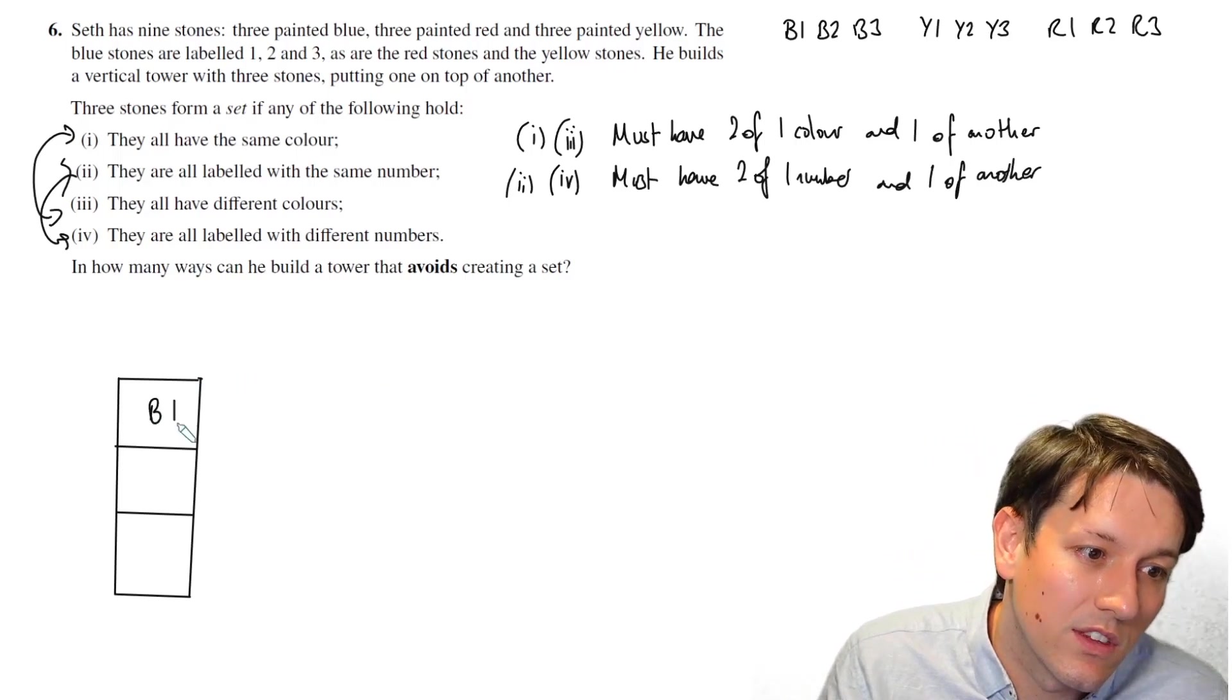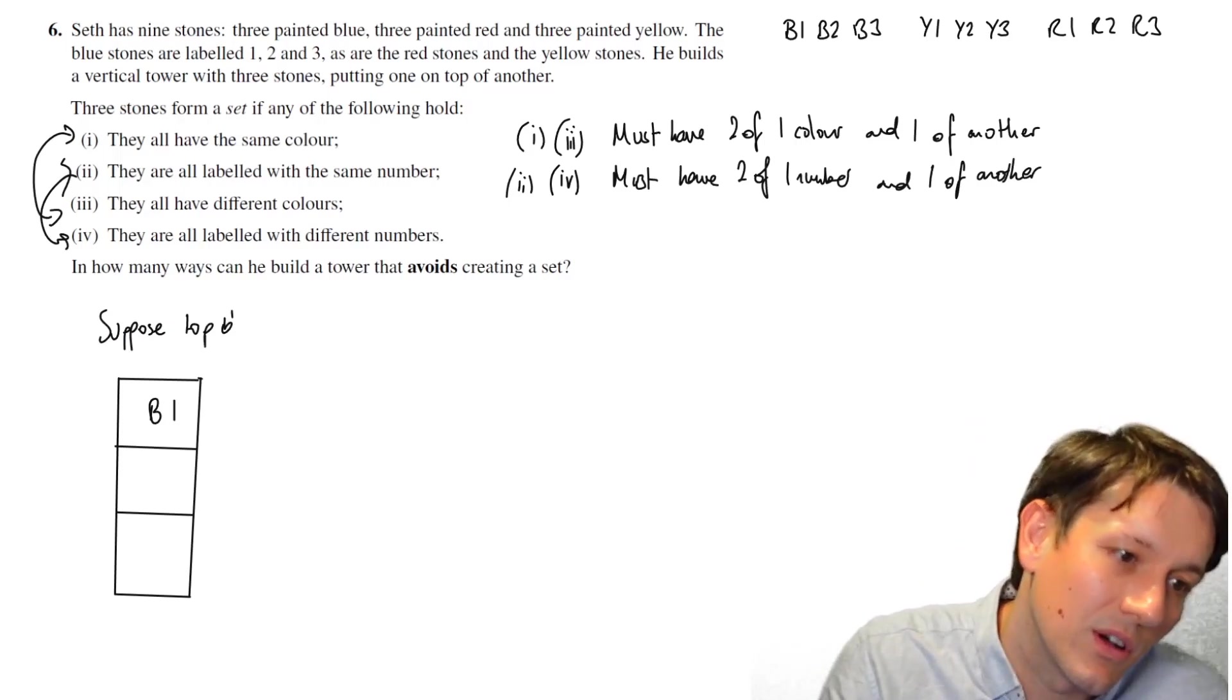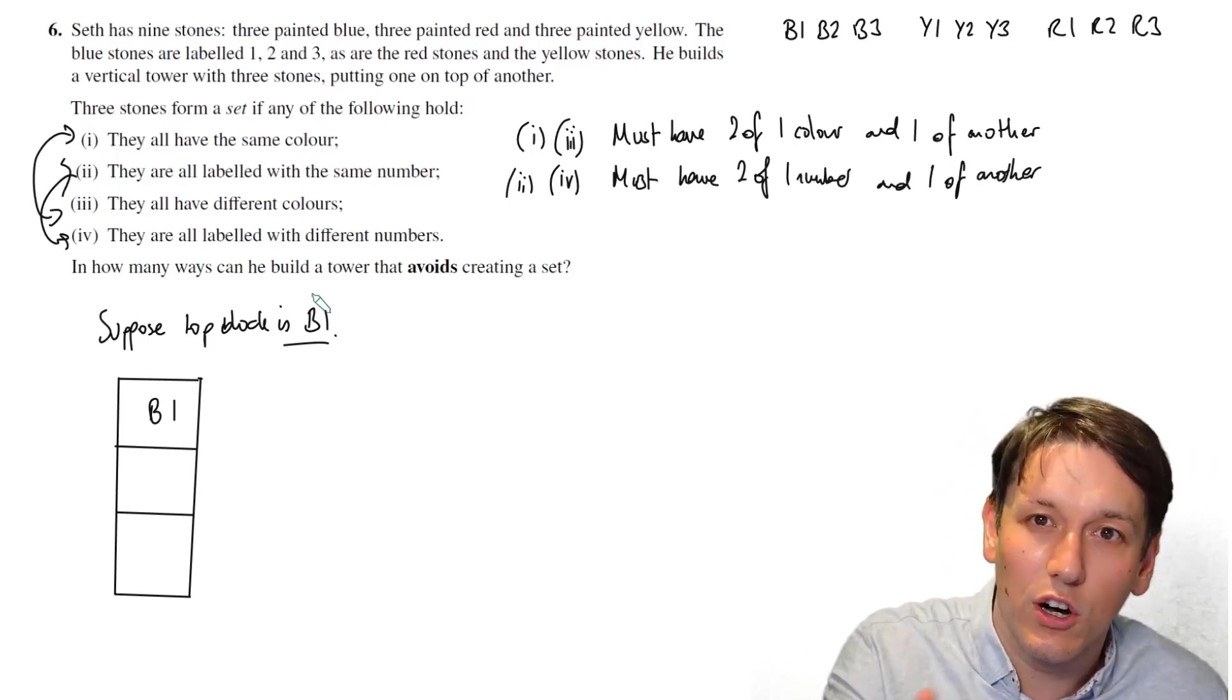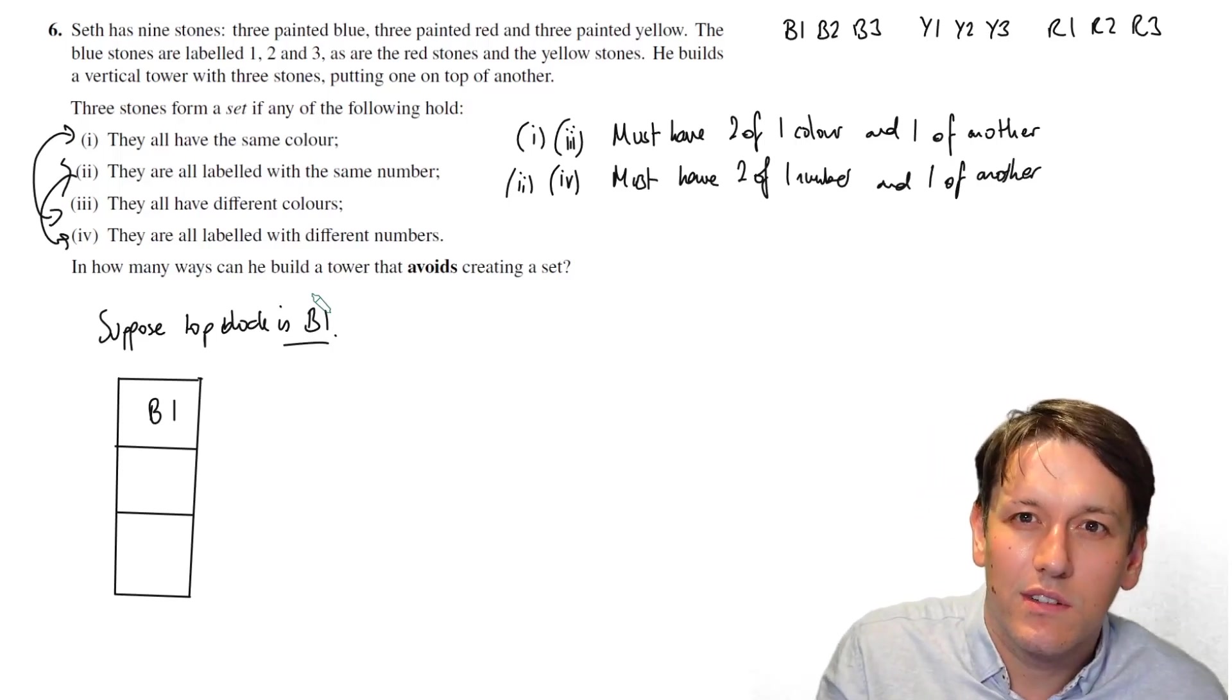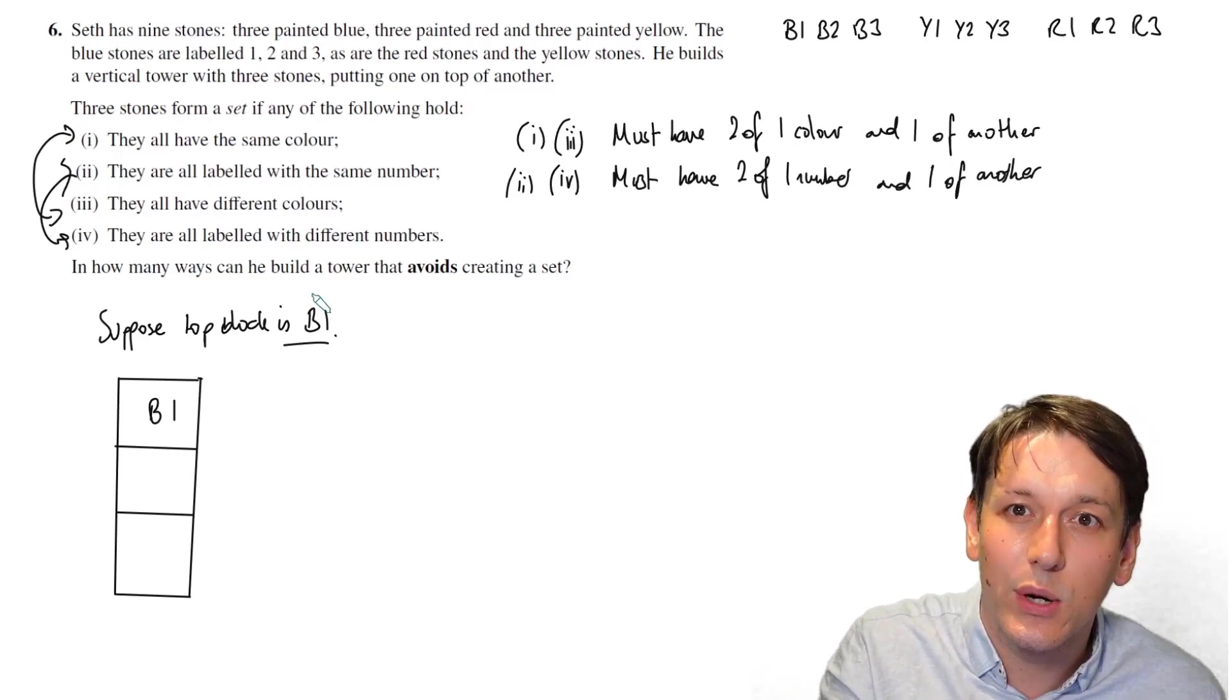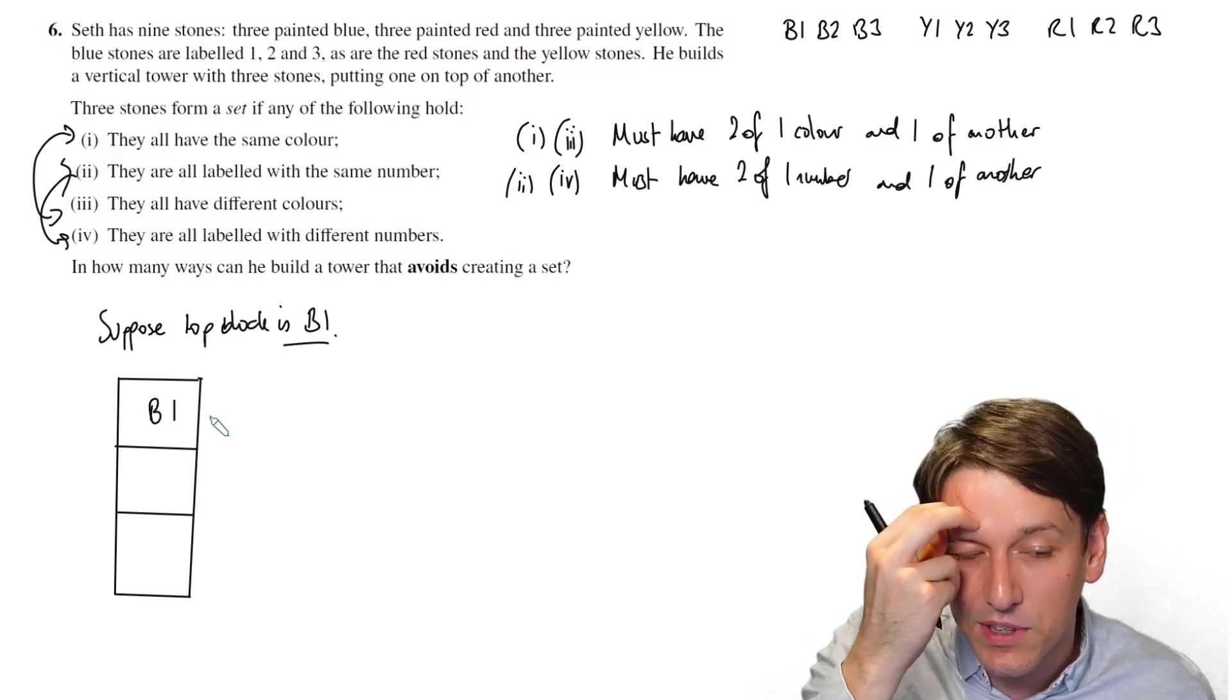I'm just going to suppose that the top block is B1. The nice thing about the symmetry in this problem is it doesn't really matter which one I put at the top. They're all equal, essentially. So the number of ways there are to find a tower that avoids a set with B1 at the top is just one-ninth of the total number of ways, because I could put B2 or B3 at the top and I'd get the same total number. I could put any of them at the top and I would get the same number that go with them.